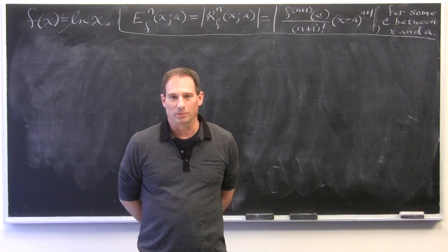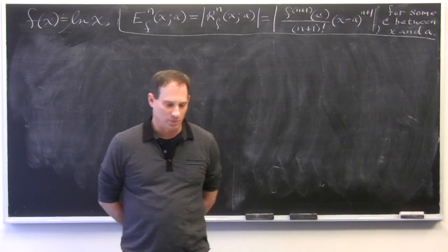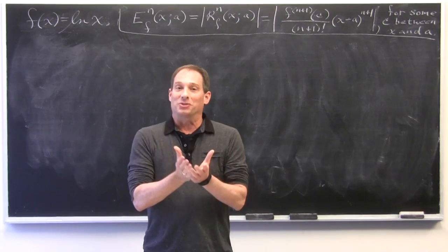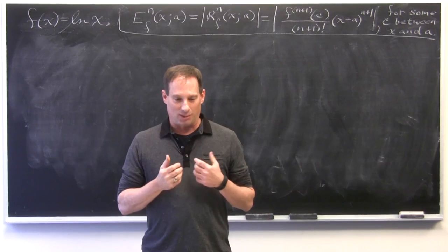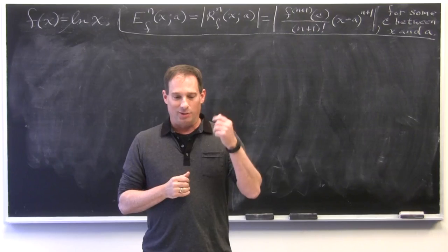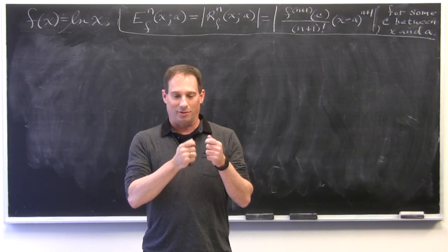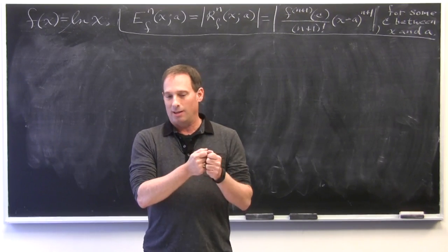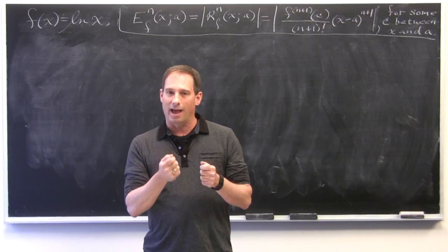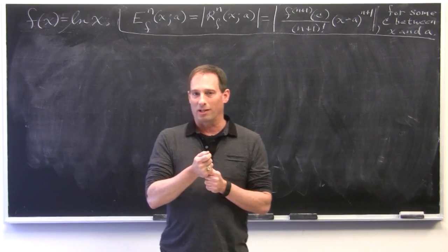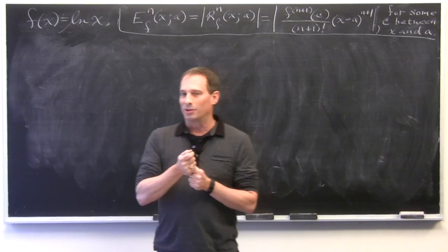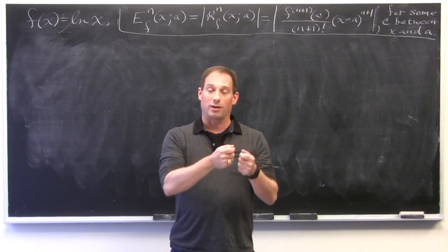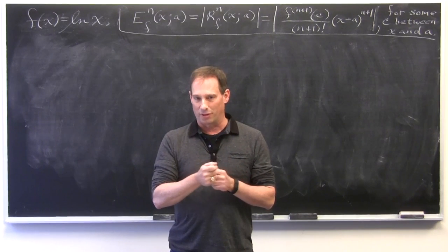I want to go over one of these problems on error approximations when you use Taylor polynomials. There are three kinds of problems you can have with those, and that's why there are three parts to the problem. There are three pieces of data: how close x has to be to the center, how much error you're willing to have, and what degree Taylor polynomial you're willing to use. In parts A, B, and C, you're given two out of three of those pieces of data and asked for the third.